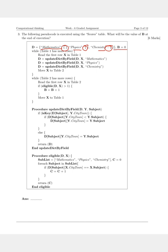Now, we see that while table 1 has more rows, we read the first row x in table 1 and we update this dictionary using a helper function called update dictionary by field that takes three parameters: the dictionary, your current card, and the string called mathematics, physics or chemistry, basically the subject name.